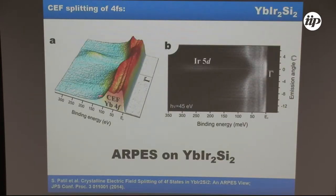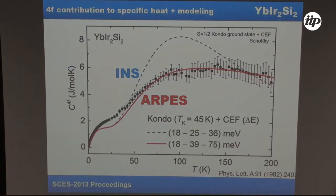Information taken from ARPES — in particular the crystal field split scheme — can be successfully used to analyze bulk quantities like specific heat. I would like to show this instructive example for erbium iridium disilicide.